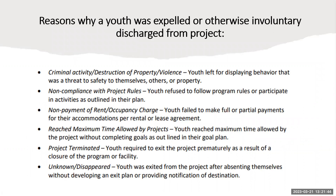Involuntary discharge categories include: criminal activity, destruction of property, or violence; non-compliance with project rules; refusal to participate in activities outlined in the plan; non-payment of rent or occupancy charge if applicable; reached maximum time allowed in the project so they aged out; project terminated because the program or facility closed prematurely; and unknown or disappeared — where the youth absented themselves without developing an exit plan or providing notification of destination.